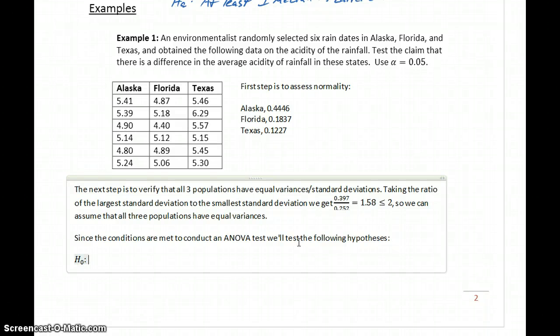Our null hypothesis will be the statement that mu1 equals mu2 equals mu3, and our alternative hypothesis will be the statement that at least one mean is different.